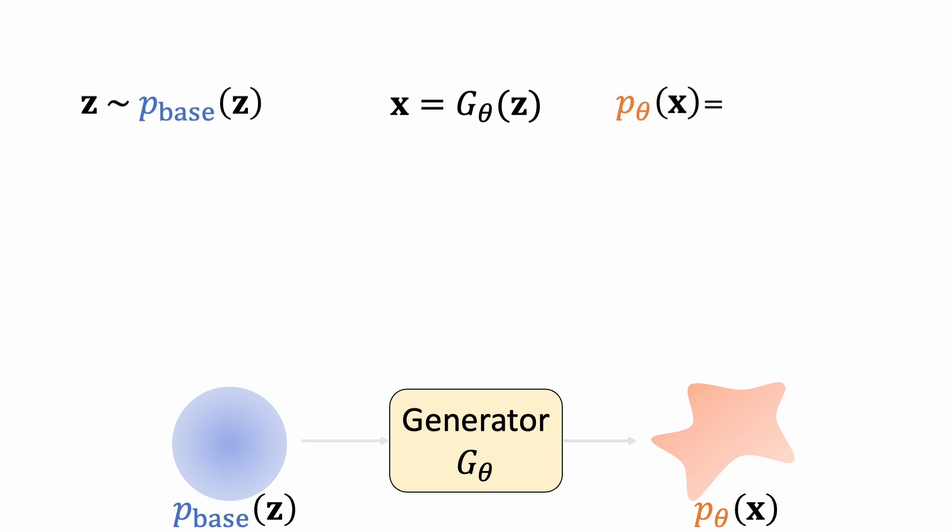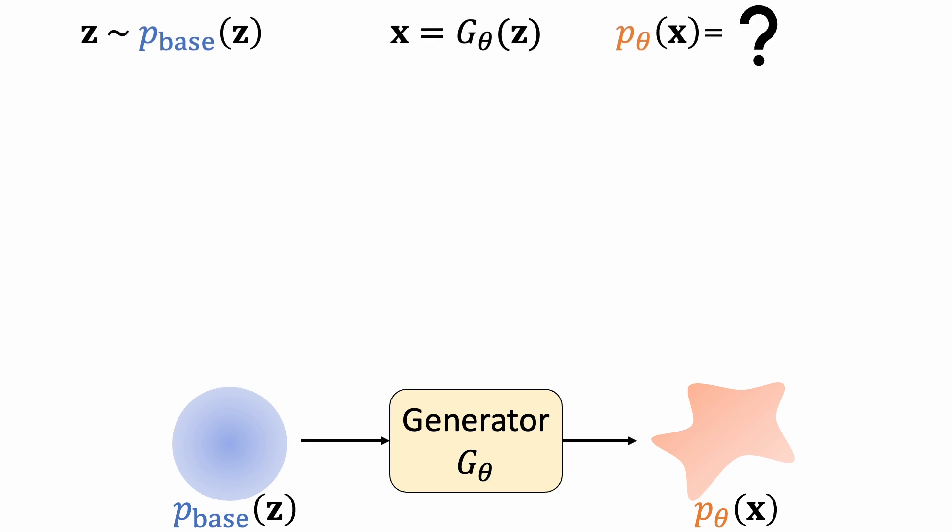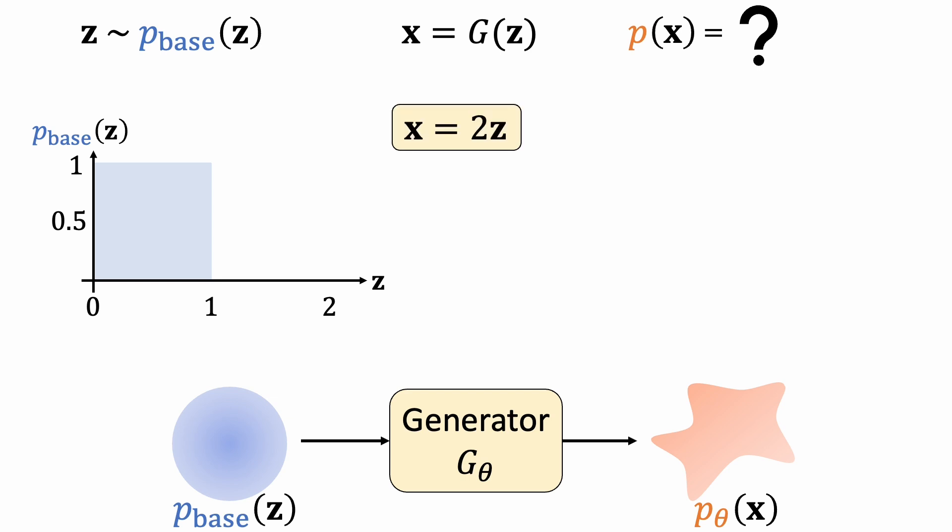Let's take a look at a one-dimensional example. Here our base distribution is a uniform distribution between 0 and 1. Suppose our generator is just stretching the z-value by a factor of 2. We see that the density of our transform distribution is now half of the original density. This is because the probability contained in these areas must stay the same.